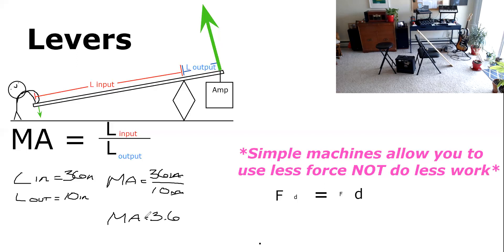That means that because of the way I had my lever set up, it was 3.6 times easier to lift the amp. Although I lifted the amp over a shorter distance.